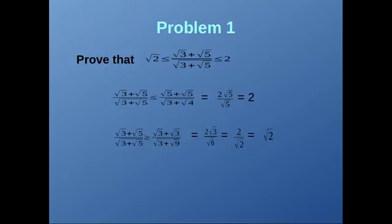We have √(3 + √5) / (√3 + √5). Let's increase its numerator by substituting √3 with √5. Therefore we get the numerator as 2√5. And let's decrease the denominator by substituting √5 as √4. Therefore we get the denominator as √3 + √4, which is √3 + 2. Therefore we get √(3 + √5) / (√3 + √5) is less than 2√5 / √5, which equals 2.